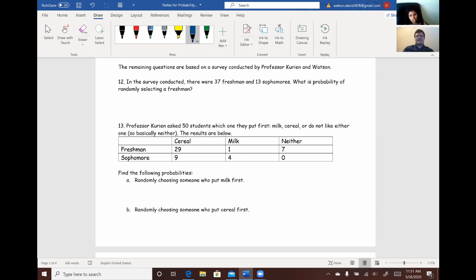Number 12. In a survey conducted, there were 37 freshmen and 13 sophomores. What is the probability of randomly selecting a freshman? All right, so for this one, we need to find how many freshmen there are and how many total students there are.